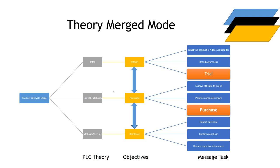Moving down into growth: the market conditions involve rapid expansion, and you face additional competitors providing value offers of interest to your customer base. Because you have competition, there is less requirement to teach the audience how to use the product and more requirement to say: mine is the best, or mine has the best fit to your needs. You can still do informational messaging in growth, but you'll be leaning towards persuasion-based messaging — you want positive attitudes, you want to be in people's choice sets, and you want people ultimately making purchases.